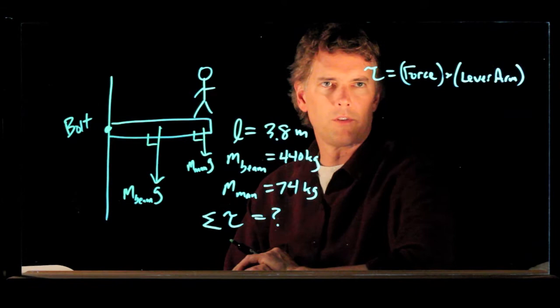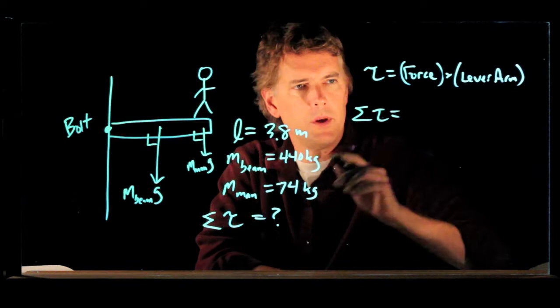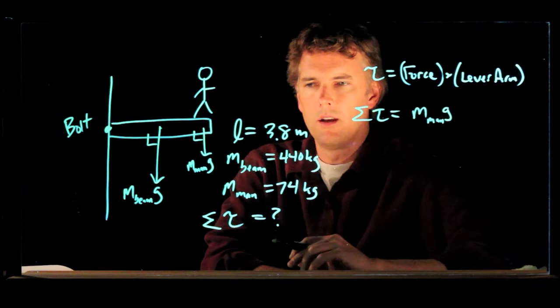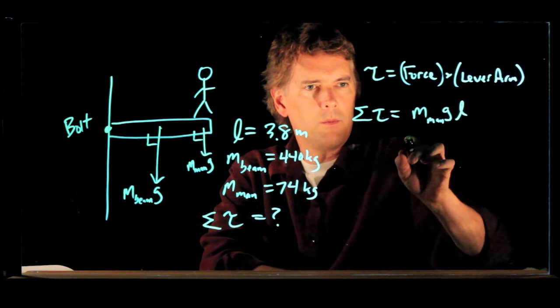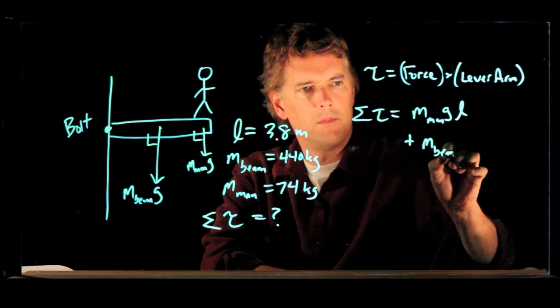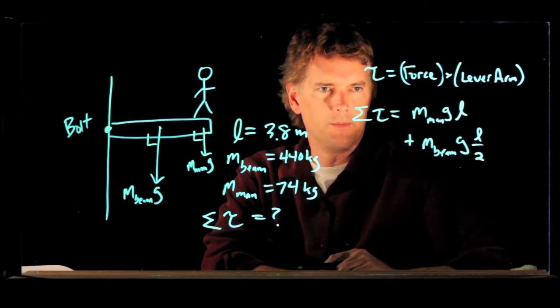All right, so what's the net torque here? The net torque is going to be M of the man times g times its lever arm, which is L. And we're going to add M of the beam times g times its lever arm, which is L over 2.